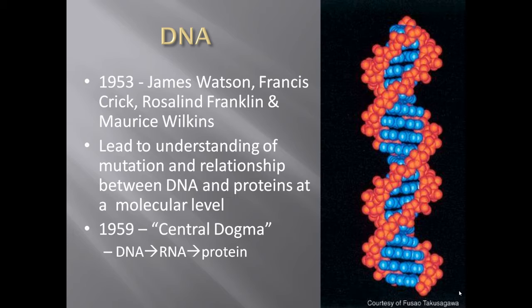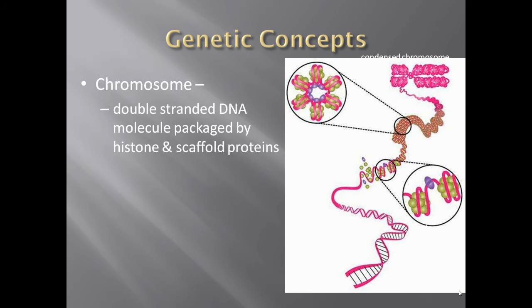In 1953, James Watson, Francis Crick, Rosalind Franklin, and Maurice Wilkins discovered the structure of DNA, leading to an understanding of mutation and the relationship between DNA and proteins at a molecular level. The central dogma, established in 1959, describes the flow of information: DNA to RNA to protein.